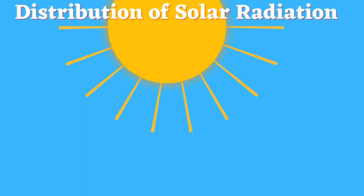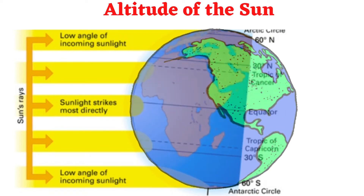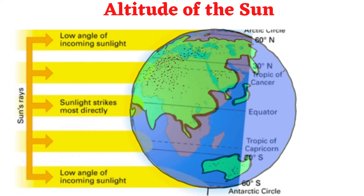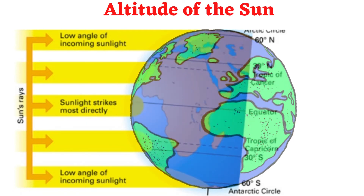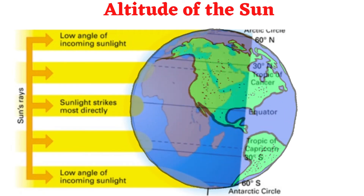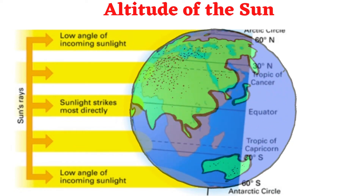The amount of solar radiation received at the earth's surface varies in both time and space. Places like the Caribbean, which are located in low latitudes near the equator, generally receive more insolation than places like Canada, which are located in higher latitudes near the poles.